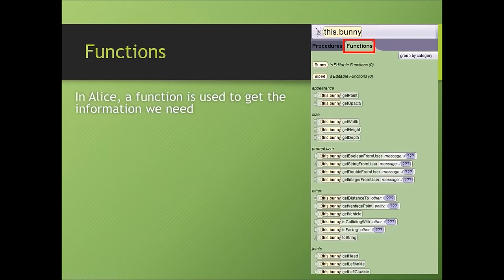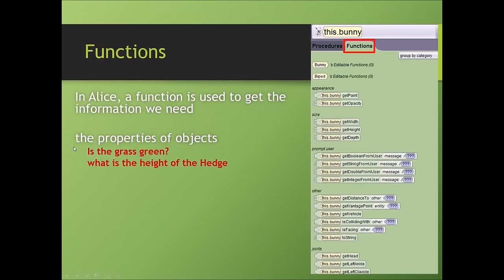In Alice, a function is used to get information we need. Sometimes the information we need is about the properties of objects. Is the grass green? We need the information about what is the color of the grass, so we can use the get paint function.